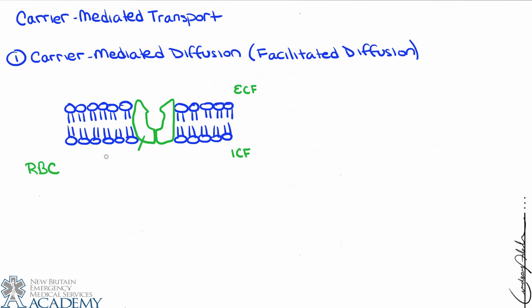We'll label the ECF and ICF and also label the transporter. This particular transporter is going to be GLUT1, found in red blood cells and specifically responsible for transporting glucose into the cell. I want to explain why we need this carrier protein. First of all, glucose can't travel through the membrane — it's not small and lipid-soluble, so it doesn't have the ability to travel through the phospholipid bilayer. It's going to bounce off.